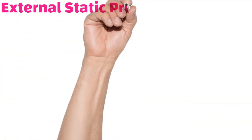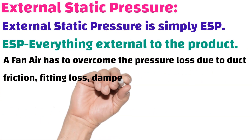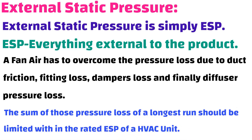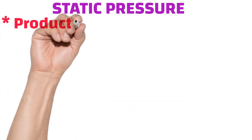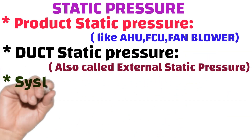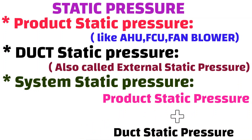External static pressure, simply called ESP, is everything external to the product. A fan's air has to overcome pressure loss due to duct friction, fitting loss, damper loss, and diffuser pressure loss. The sum of those pressure losses on the longest run should be limited within the rated ESP of the HVAC unit. There are three kinds of static pressure: one — product static pressure from the fan or AHU fan coil unit; two — duct static pressure, which is external static pressure losses; three — system static pressure, which is a combination of product and duct static pressure.